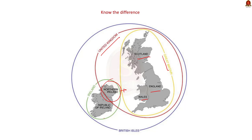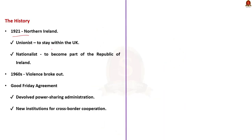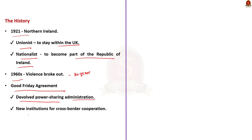There are two groups: Unionists, who wanted Northern Ireland to stay within the UK, and Nationalists, who wanted it to become a part of the Republic of Ireland. From the late 1960s, armed groups from both sides were involved in violence for nearly 30 years. An agreement called the Good Friday Agreement was signed, bringing violence to an end. It established a devolved power-sharing administration, created new institutions for cross-border cooperation, and allowed for free movement of goods and people. All went well until the UK decided to leave the European Union.